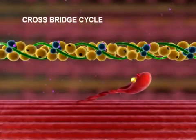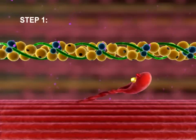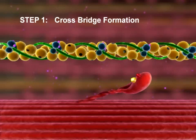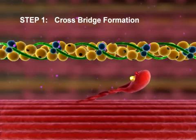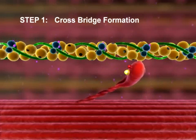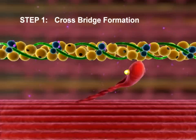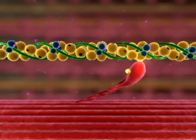A crossbridge cycle may be divided into four steps. Step 1: Crossbridge Formation. The activated myosin head binds to actin, forming a crossbridge. Inorganic phosphate is released, and the bond between myosin and actin becomes stronger.